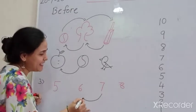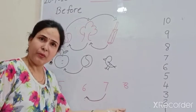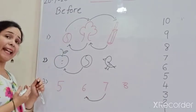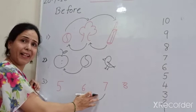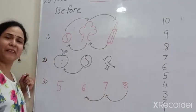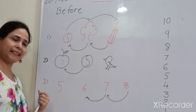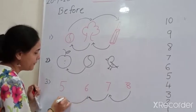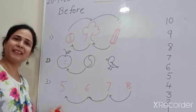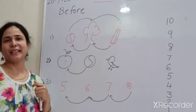Yes, it's 6. If I ask you, before 8, which number is coming, kids? Before 8, is there 6 or 7? Yes, very good, there is a 7. If I ask you, before 6, which number is coming, kids? Yes, there is a 5. So, this is what we learnt — the concept of before numbers.